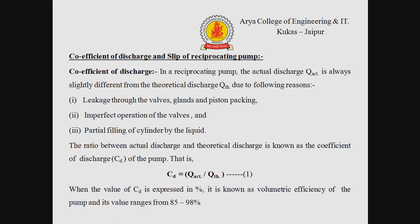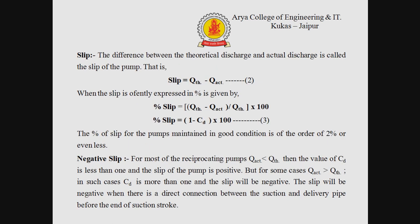That is shown by equation number 1. When the value of CD is expressed in percentage, it is known as volumetric efficiency of the pump, and its value ranges from 85 to 98%.